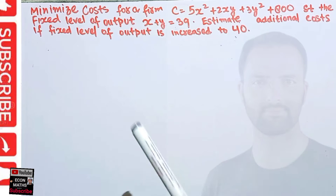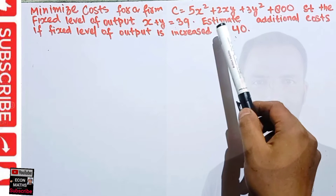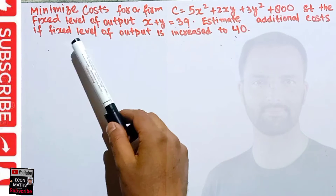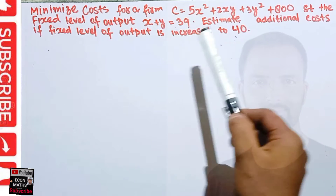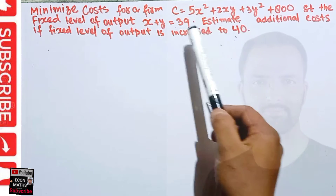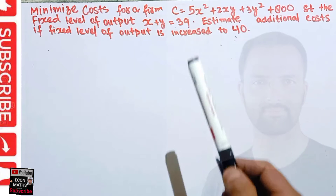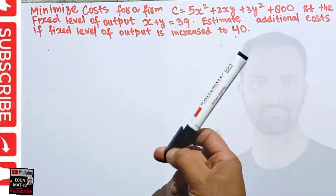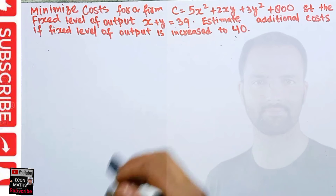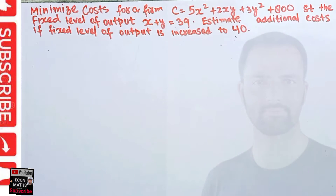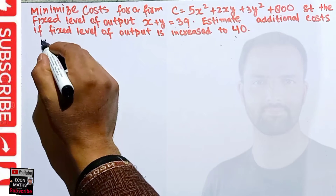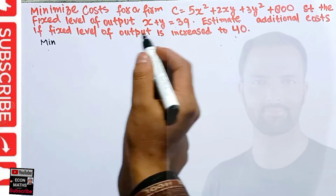This is our production quota. We also have to estimate the additional cost if the fixed level of output is increased by one unit — that means if there is a change in this constraint constant by one unit, what will be our additional cost? So let us see how to solve this.